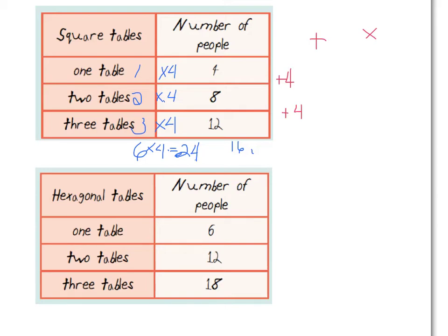So you can look at patterns two ways. You can look at it in the table across, or you can look at it up and down when you're just looking at the number of people and seeing what's changing there. Let's try that with the next one. And again, from 6 to 12 to 18, what are we noticing? Well, it is increasing. So again, we're going to have to add or multiply.